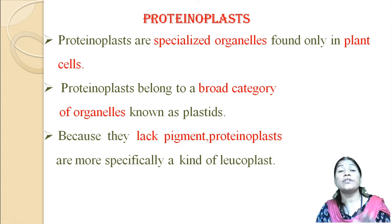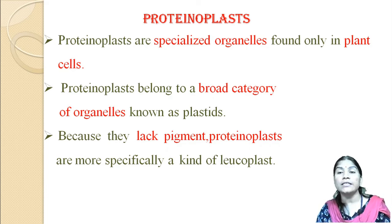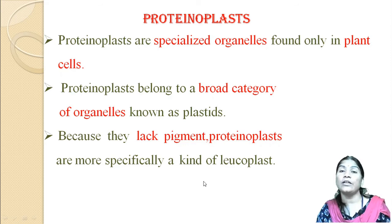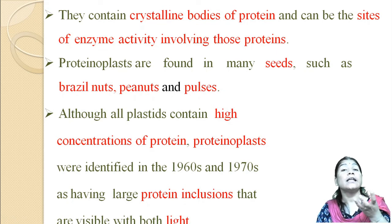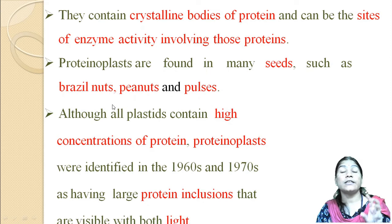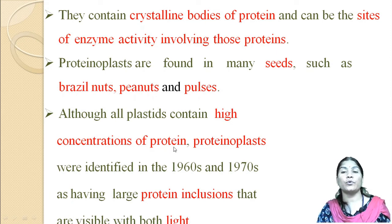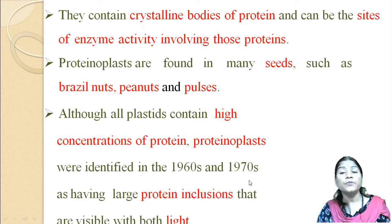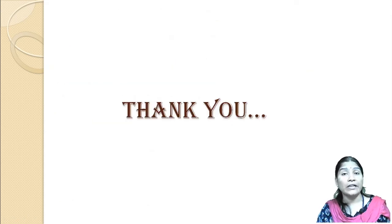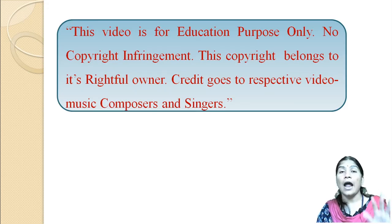Proteinoplasts are specialized organelles found in plant cells, belonging to the broad category of plastids, and they also lack pigments. They are most commonly part of the leucoplasts. They contain a crystalline body of proteins and are the site of enzyme activity involving proteins. They are found in seeds such as bean, pea, and pulses. Although all plastids contain high concentrations of protein, proteinoplasts were identified in the 1960s and 1970s as having large protein inclusions visible with both light and electron microscopes.